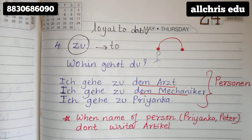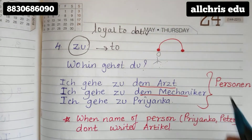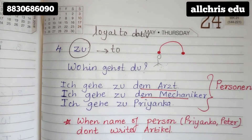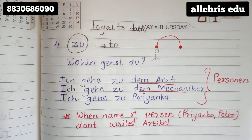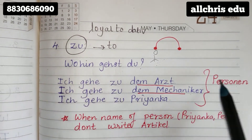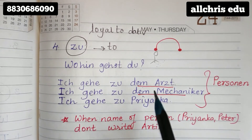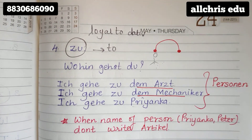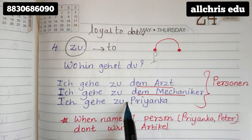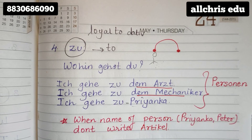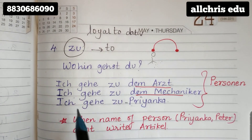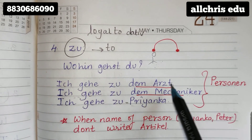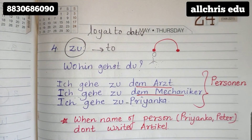That person can be a profession also. Arzt means doctor, Mechaniker means mechanic. For Arzt and Mechaniker, of course we need to write an article, and they are persons too — so 'zu' can be used with persons. If they have an article, write the article. If names are given — like Peter, Sania, Mika — you don't have to write an article, because in German articles don't come with names. So: 'Ich gehe zu Priyanka' means I am going to Priyanka. 'Ich gehe zu dem Mechaniker' — I am going to the mechanic. 'Ich gehe zu dem Arzt' — I am going to the doctor. So 'zu' can also be used for Personen.